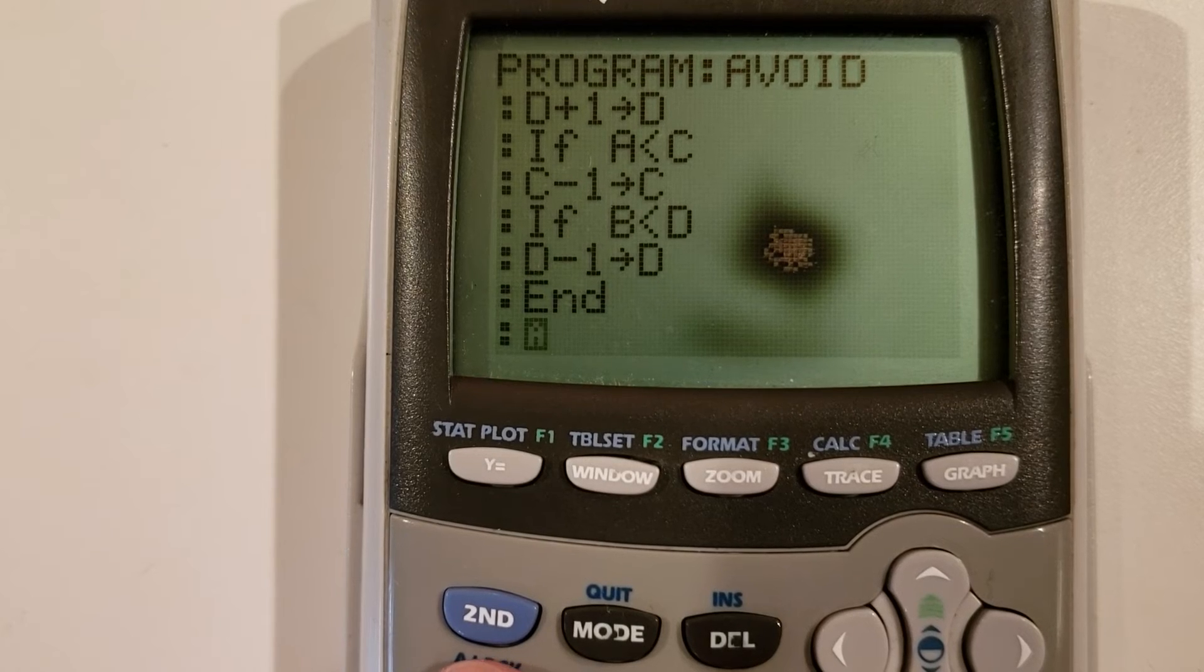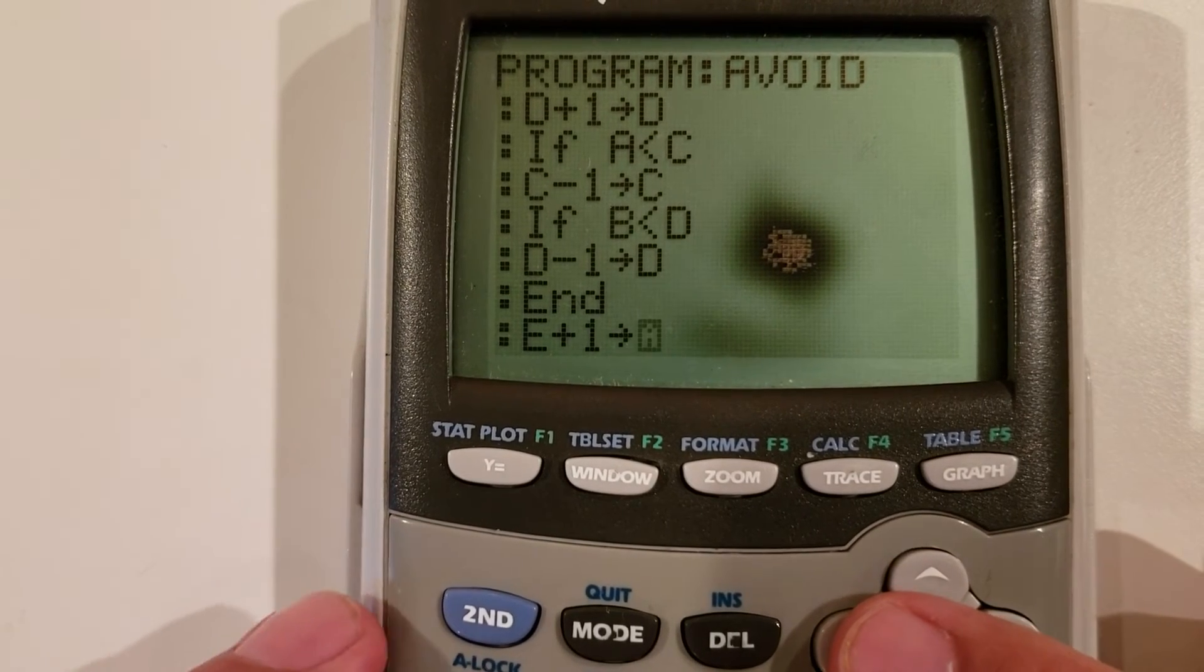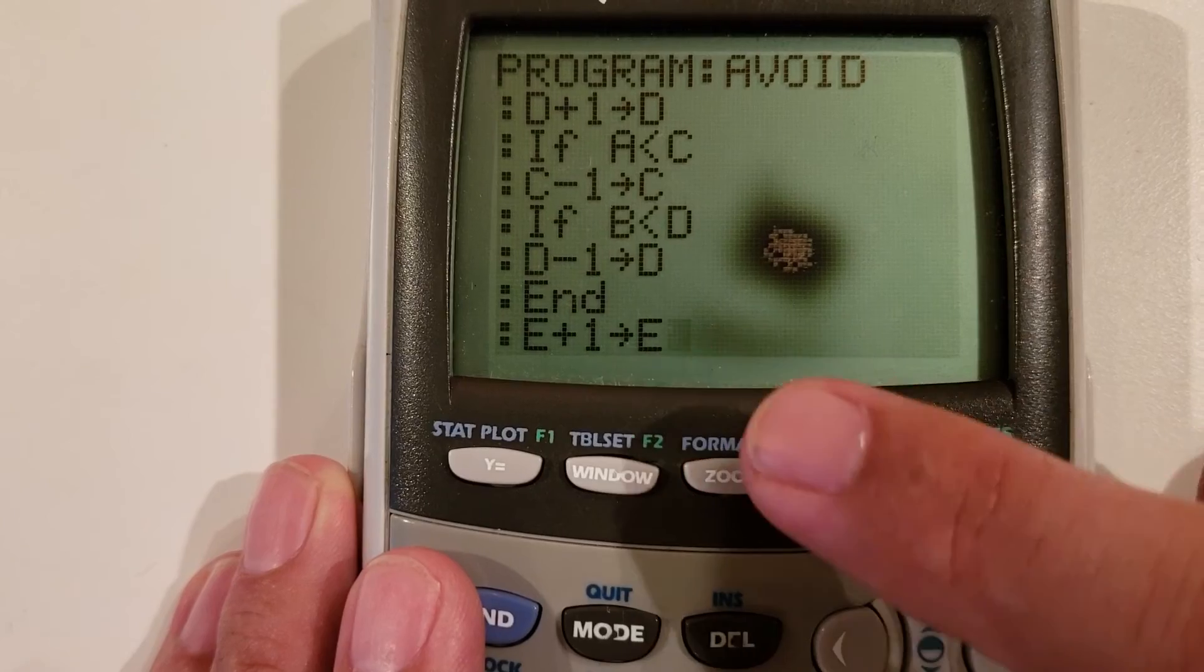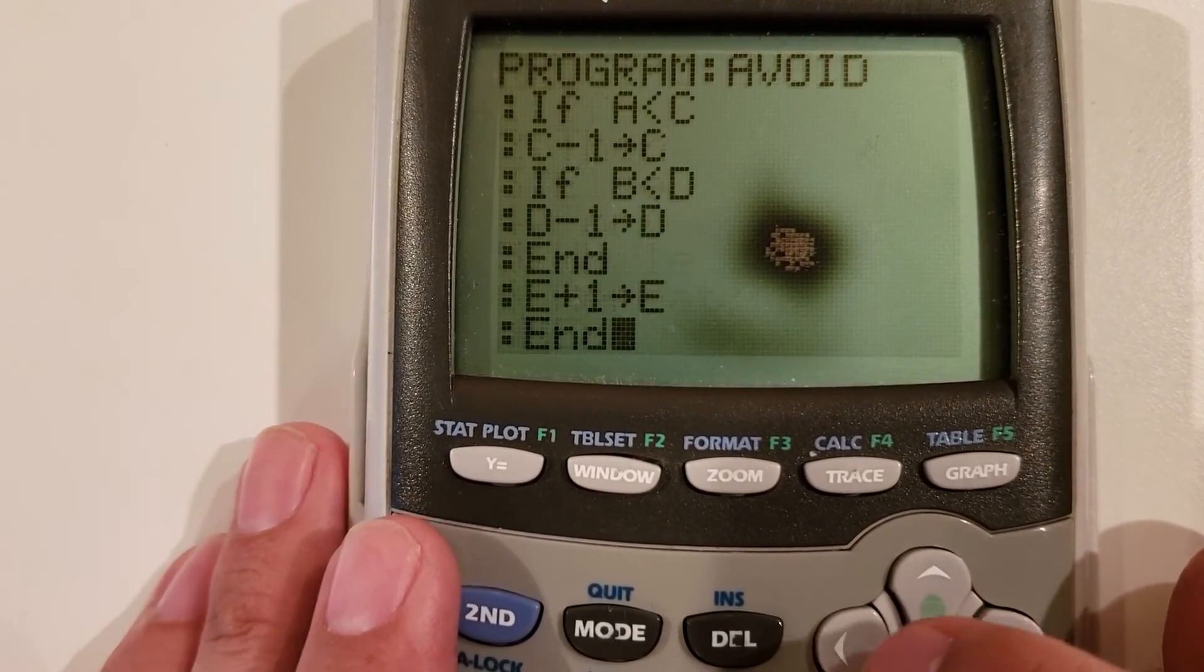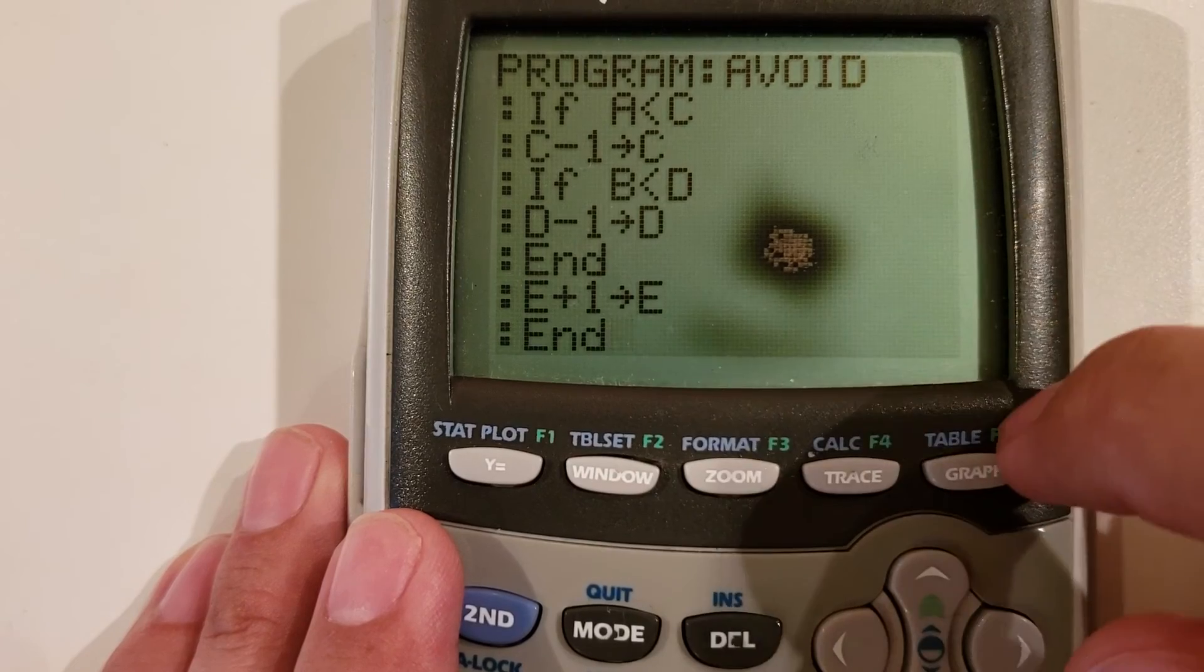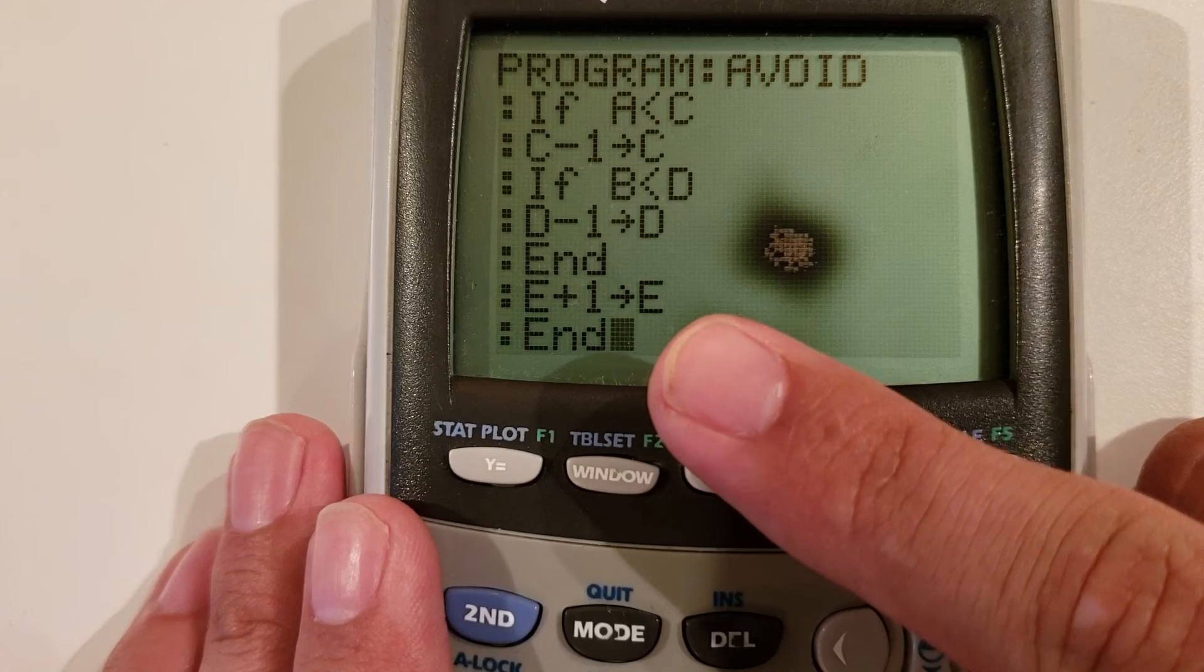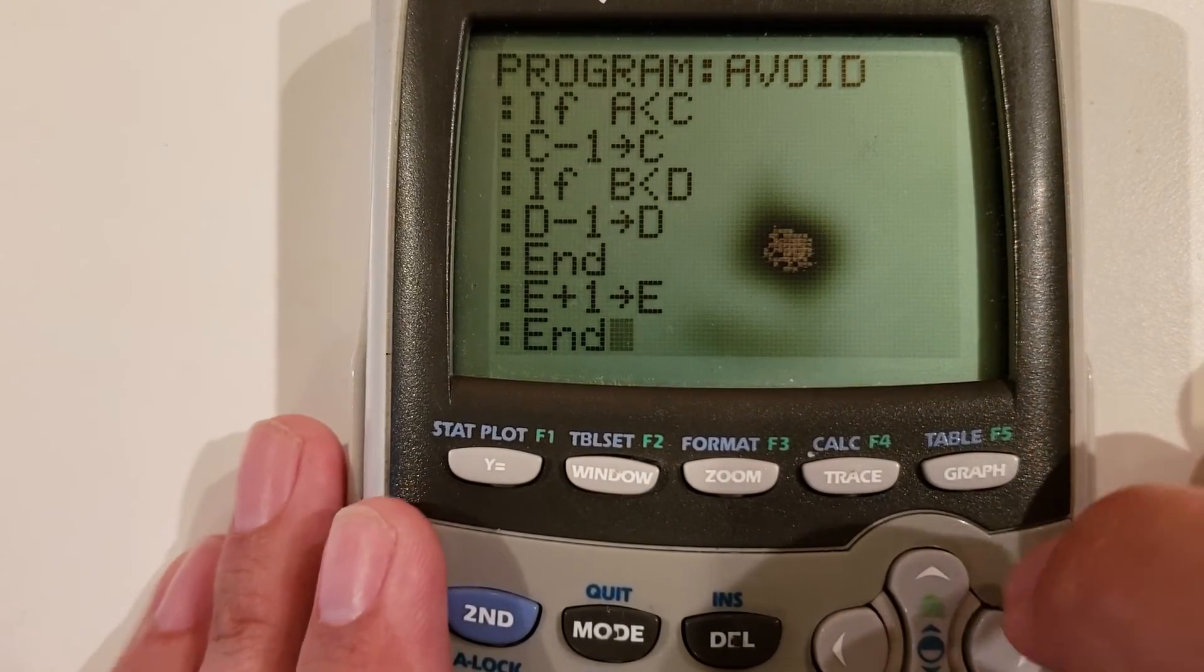When you do an if-then statement, you do need to have an end to close the then. The calculator doesn't have any kind of indentation, so this is the only way it knows to close that if-then statement. Now, I'm back in the main body of my loop. Store that back into E. This increments the player's score every tick. I'm going to add another end statement. This will close the loop. We've now got output, input, and we do some stuff with that input.